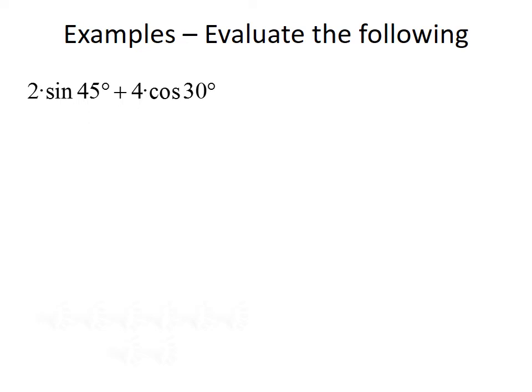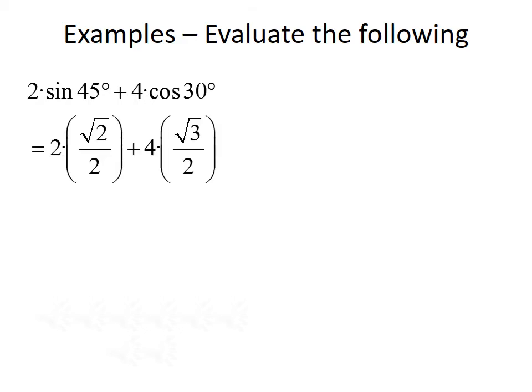Let's look at another example — we want to evaluate 2 times the sine of 45 degrees plus 4 times the cosine of 30 degrees. We put in the values from our chart: 2 times the square root of 2 over 2, which is sine of 45, plus 4 times the square root of 3 over 2, which is cosine of 30. After simplifying, the 2's cancel in the first term leaving the square root of 2, and 4 divided by 2 gives 2 root 3. So our overall answer is the square root of 2 plus 2 times the square root of 3.